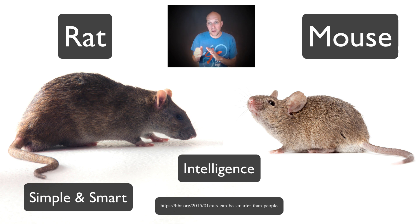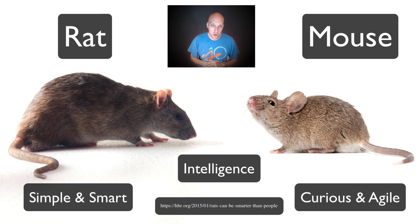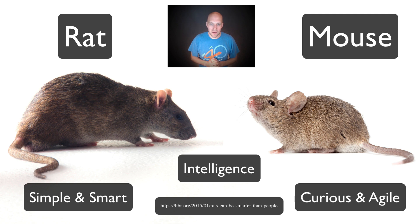Mice, on the other hand, are very curious and will more easily fall for a trap. But unlike rats, they can jump a lot further and are much spryer. So rats are smarter, but mice are more agile. If you're setting up a trap, mice might be able to get out of it more easily because they're agile, but rats might be tougher to trick into the trap itself.